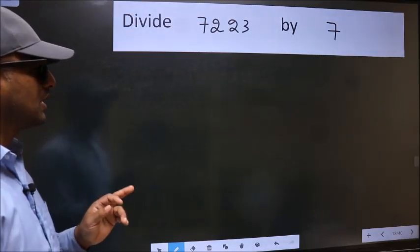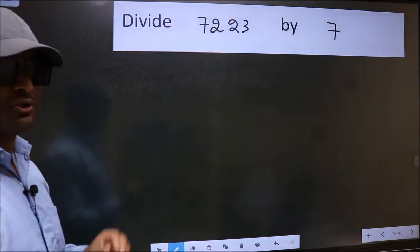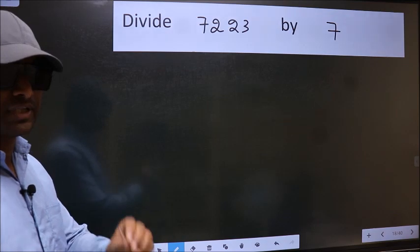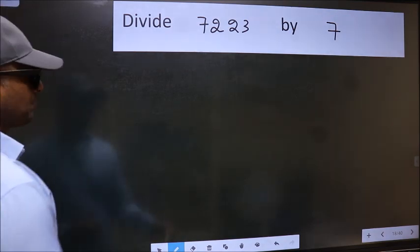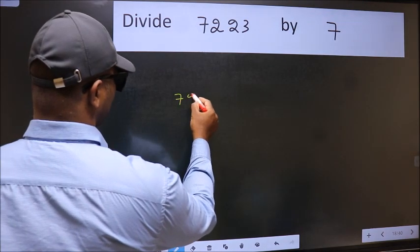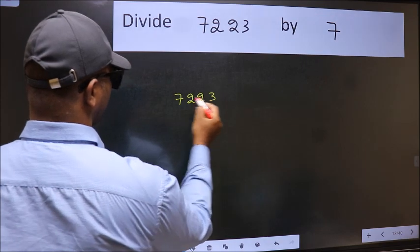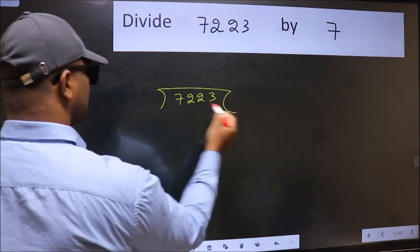Divide 7223 by 7. To do this division, we should frame it in this way. 7223 and 7 here.